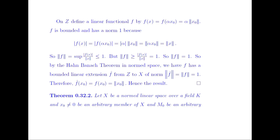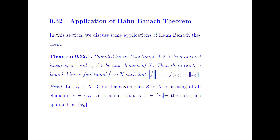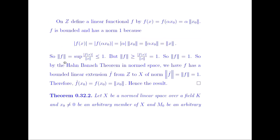This f is bounded and has norm 1 because the modulus of f(X) = modulus of f(αX₀) = modulus of α times norm of X₀ = norm of αX₀ = norm of X, since X = αX₀. So the norm of f is the supremum of |f(X)| over norm of X.